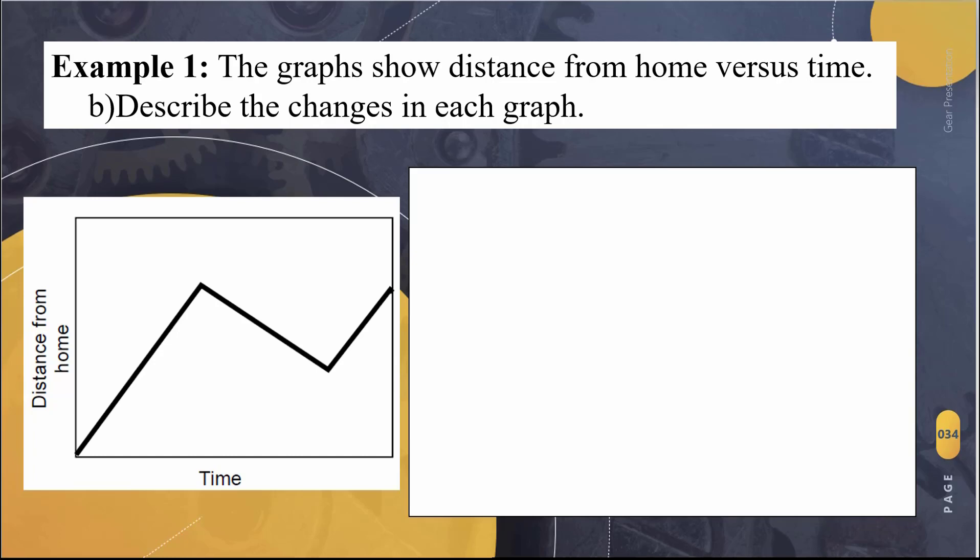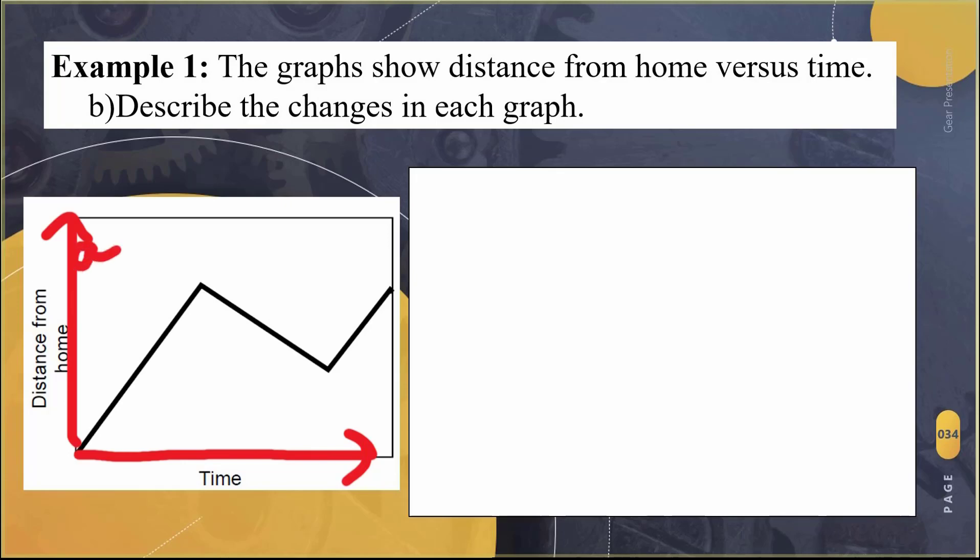So let's look at example number one. The graph shows the distance from home versus time, and we're going to describe the changes in each graph. So we can see that there's one, two, three different sections of this graph that we need to talk about. Do not get confused with the up and down being speed like faster and slower, like the downhill is slower and the uphill is faster. That's not what it's talking about. This is how far away you are from home. So as you go up this line, you're going further away from home.